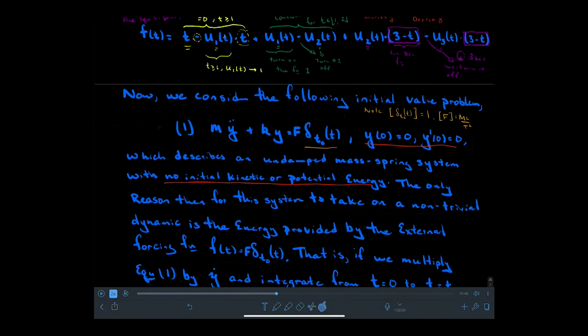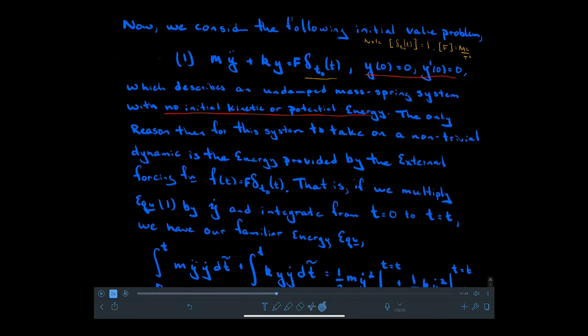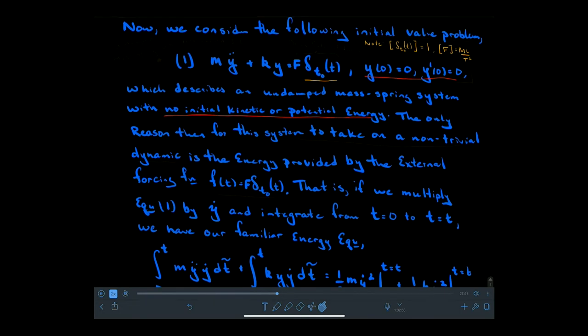I mentioned earlier that this is somehow connected to the delta function, but it's not obvious how. To consider how it's connected to the delta function, we want to think about looking at a particular initial value problem. That particular initial value problem is right here. What we want to understand about this particular initial value problem is that it's an undamped mass spring system with zero valued initial conditions.